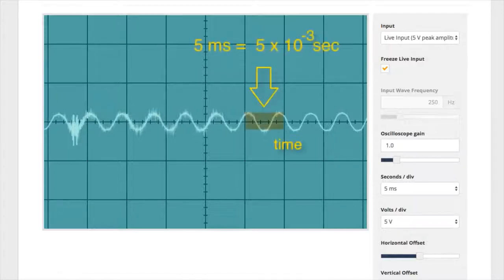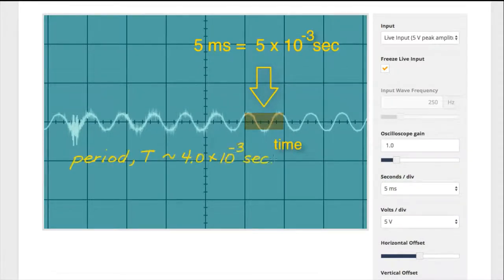The horizontal axis is time, and each division is worth 5 ms, as displayed here. So you can see that the period, or the time that it takes for a sound wave to travel its wavelength, is this. The frequency is one on the period, or in this case, 250 Hz.